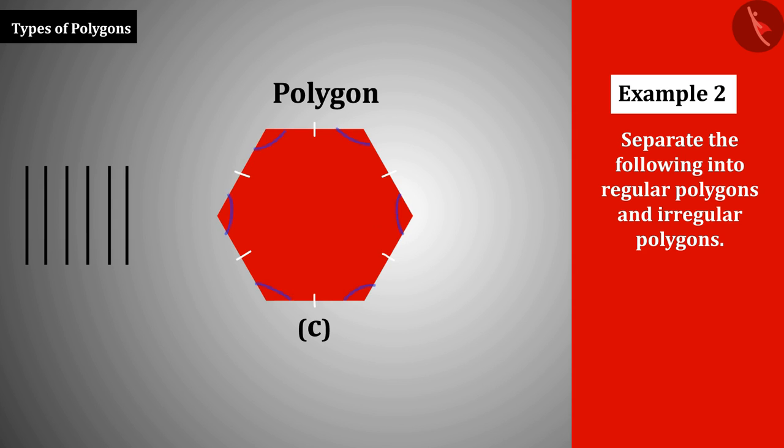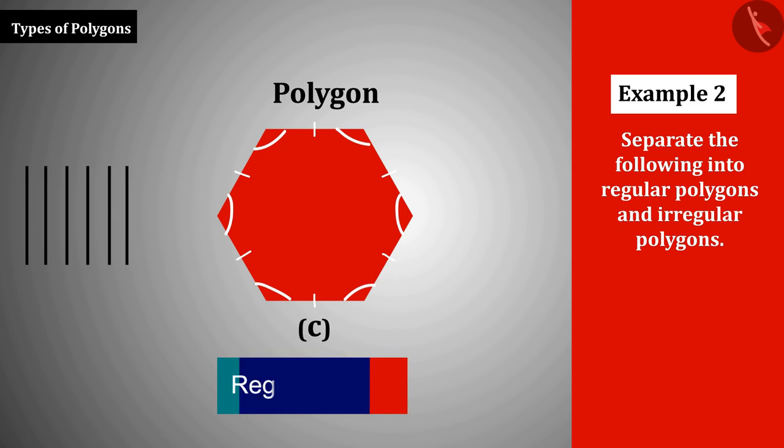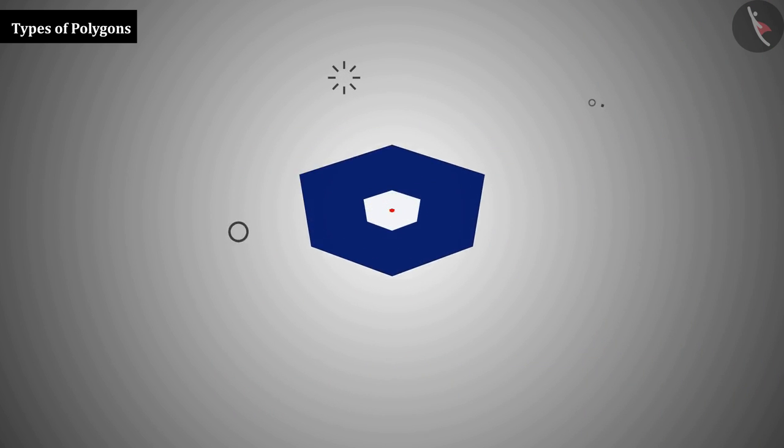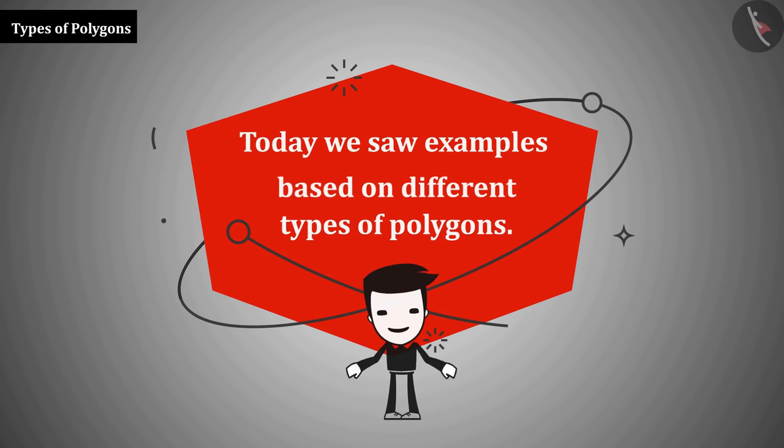all the angles are also equal to each other. Hence, it is a regular polygon. Today we saw examples based on different types of polygons. In the next video, we will discuss misconceptions based on these.